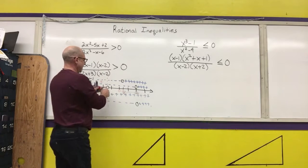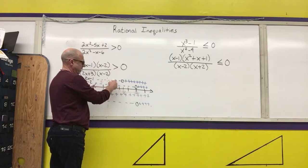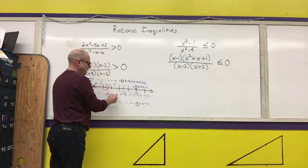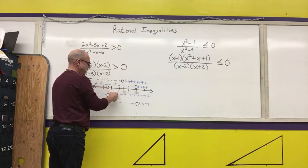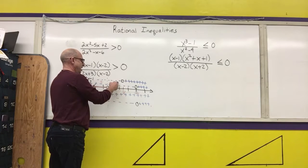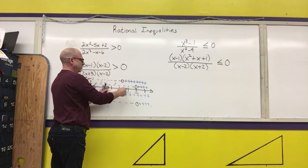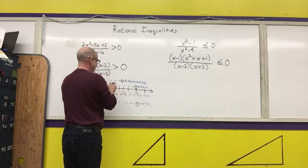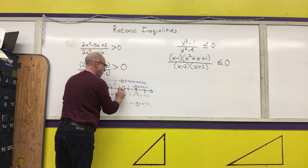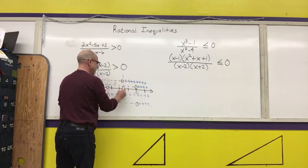Next, I'm going to analyze between negative three-halves and one-half. Negative over a negative is a positive; positive over a negative is a negative; positive times negative is negative; positive over negative is a negative. A negative is not greater than zero, so I'm not going to shade in any of this region between these points.